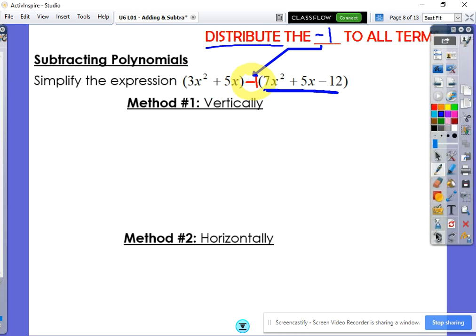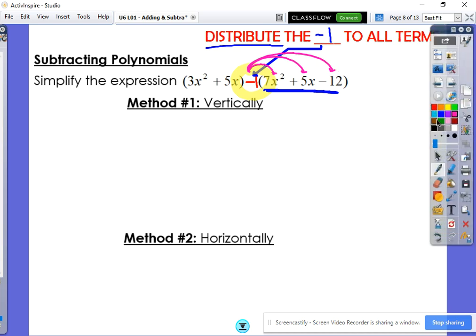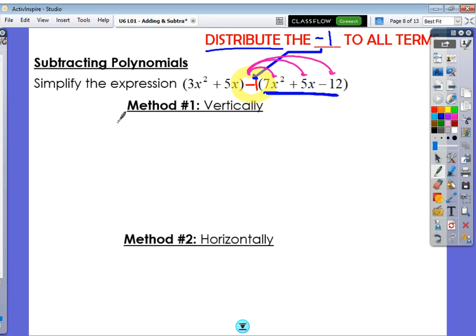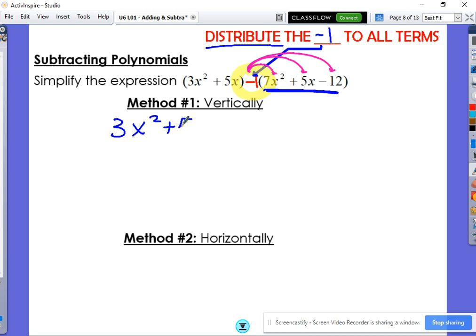You never have to change those. The negative one needs to be distributed to this term, to this term, and to this term. So by doing so, that changes pretty much the entire problem. The first part of the problem stays the same.